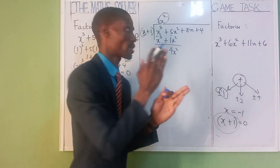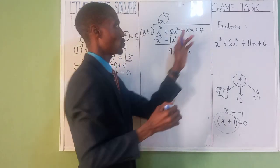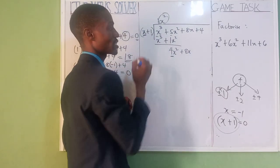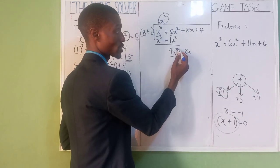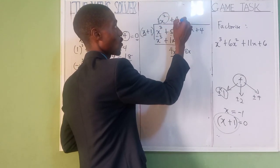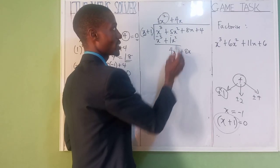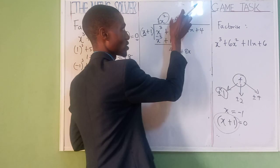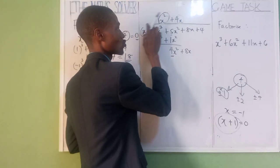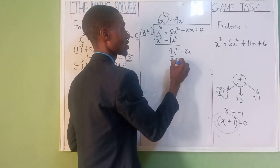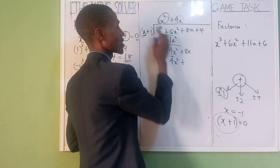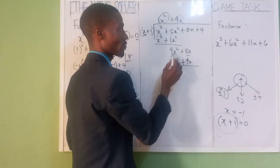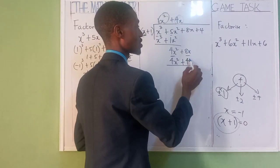We are eliminating them one by one. Now use x to divide 4x squared: that gives plus 4x. Anything you get here, multiply the two numbers you have. So 4x times x is 4x squared, plus 4x times 1 is 4x. We use minus: 4x squared minus 4x squared cancels. 8x minus 4x is 4x. Bring the next one down: plus 4.